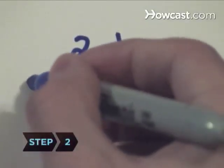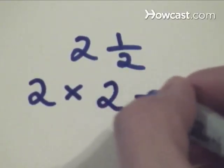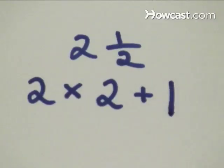Step 2: Multiply the denominator, the bottom number of the fraction, by the whole number, and then add the top number of the fraction, the numerator. Write the product on top of the denominator.